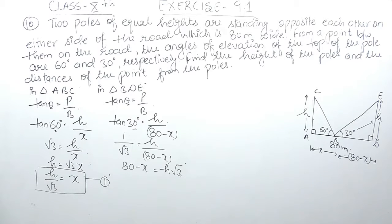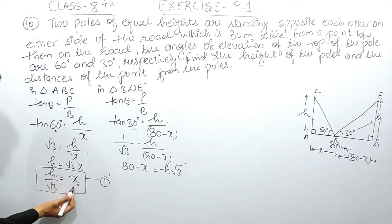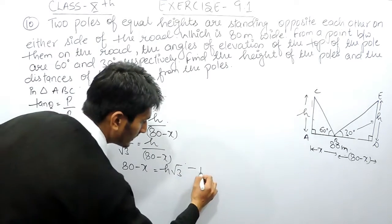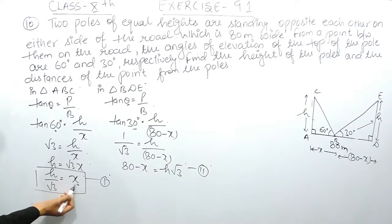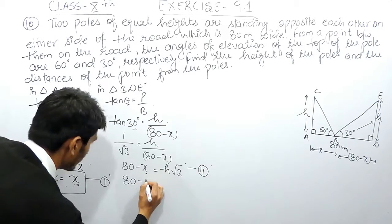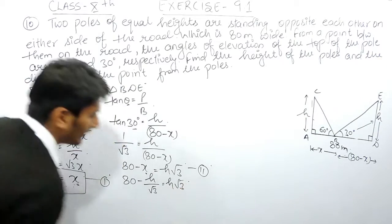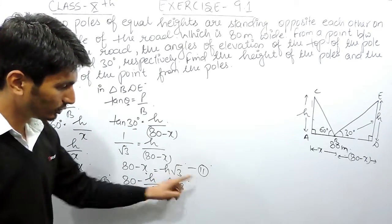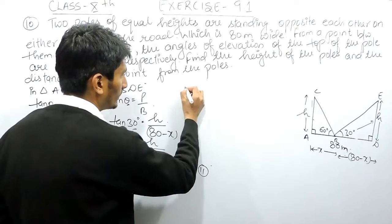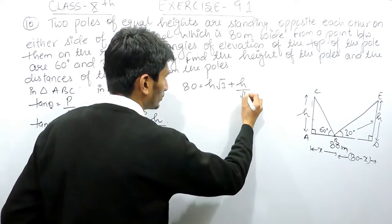First, find the value of H, which is the height of the pole. Substitute the value of X from the first equation into the second equation. So 80 minus H upon root 3 equals H root 3. Shifting the variable to the right-hand side: 80 equals H root 3 plus H by root 3.